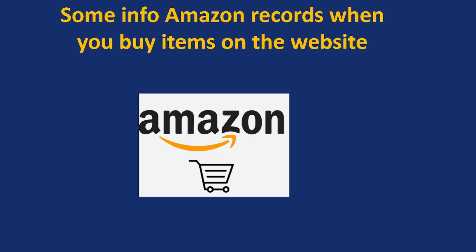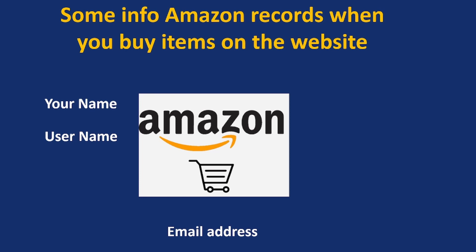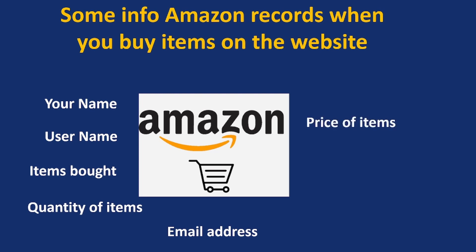Let's say you go on Amazon.com and you are trying to order some items. What information is captured at that moment? Your name is going to be captured — when you registered on Amazon you're already registered with your name. Also your username and your email address — all these are data. The items you bought, the quantity, the number of items, the price of the items, and the category of the items are all going to be recorded and captured at the time of purchase. All this makes up data.